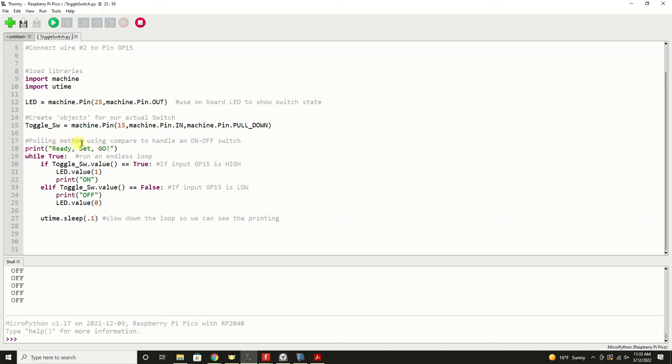We're going to use a polling method to compare and handle the on-off switch. I have this habit of printing ready, set, go at the start of my MicroPython programs. Don't know why. Just got in the habit. Haven't stopped. But here's what would typically be the main loop in your MicroPython program. You always have a main loop that's constantly cycling. Now here's the real tricky part of the magic of reading the position of the switch. We're going to say, with a conditional statement, if toggle switch dot value is equal to true, meaning it's on, if input GP15 is high, on, we'll turn the LED on.